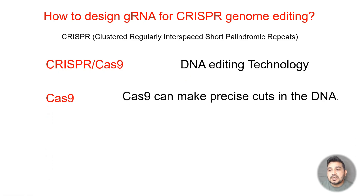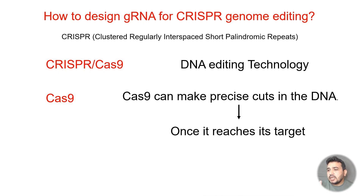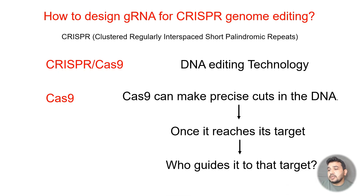Cas9 can make precise cuts in the DNA. We can use this feature of Cas9 — cutting at a precise location in the DNA — for our own benefit. It is also important to know that although it can cut at a precise location once it reaches its target, we should also know what guides it to its target. Once that target is achieved, Cas9 cuts that DNA part.